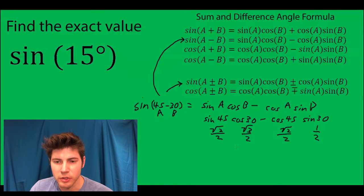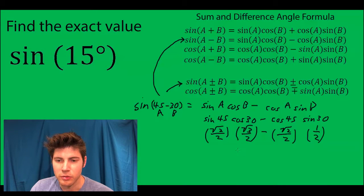And then when you multiply them across you get a big minus sign. So it's √6, because that times that is √6, over 4, minus √2 over 4.